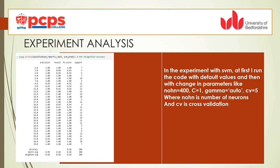Experiment and analyze. In the experiment with SVM, at first I ran the code with default values and then with changes in parameters like nodes 400, C=1, gamma auto, and cross-validation 5. Here, nodes is the number of neurons and CV is cross-validation.